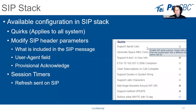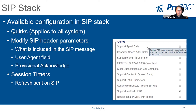You also have SIP header parameters. These are shown in the configuration and you can decide what to include in the SIP message. For example, the user agent field can be modified. You can configure the provisional acknowledge — in some environments you need to use PRACK and this is where you configure it. There are also other parameters such as whether to send date and time, which you can remove. You have a list of parameters there that you can adjust.